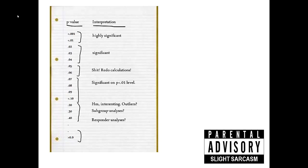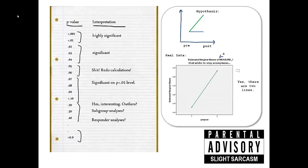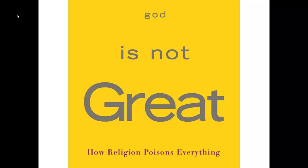Some of you probably know tables in which an interpretation of p-values is given. But when you have really bad data, the table ends where it begins to get interesting. So I extended this table a bit. If you have a p-value greater than 0.9, you have two options: either we evaluate life values or the p-value. The latter is what I am going to do now — I want to explain why the p-value and null hypothesis significance tests are not great.